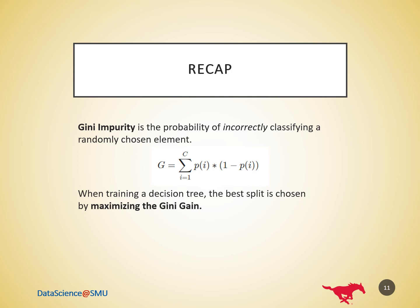So, what is Gini impurity? Gini impurity is the probability of incorrectly classifying a randomly chosen element in the dataset if it was randomly labeled according to the class distribution in the dataset. It's calculated as the sum of products P(i) multiplied by 1 minus P(i), where C is the number of classes and P(i) is the probability of randomly picking an element of class i. When training a decision tree, the best split is chosen by maximizing the Gini gain, which is calculated by subtracting the weighted impurities of the branches from the original impurity. Thank you for your attention.